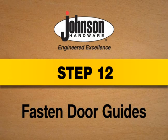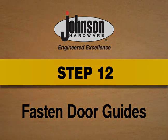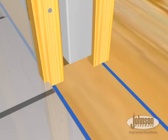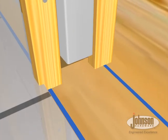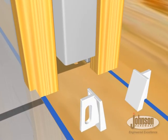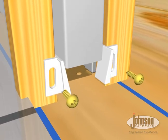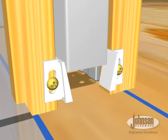Step 12. Fasten door guides. To ensure doors are secured in the center of the opening, fasten 1550 guides on finished split jam trim at door bottoms.